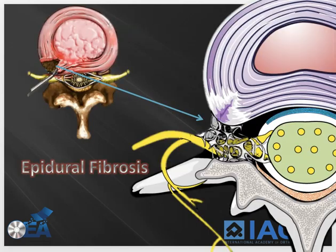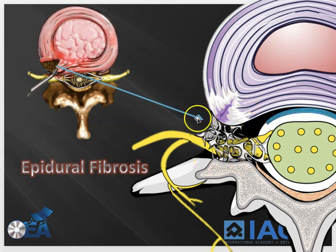Sometimes you get back surgery, like a discectomy, where the surgeon takes out part of the disc that's been pushing on the nerve root and does a wonderful job, but then the body scars over the nerve root — and that's called epidural fibrosis. It's not easy to find pictures of what this looks like, so the illustration here depicts a spiderweb-type scar tissue to represent it visually.